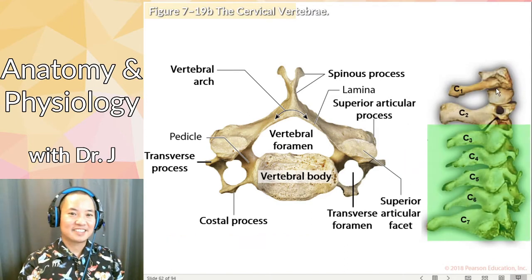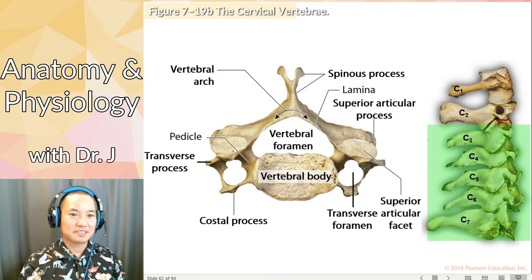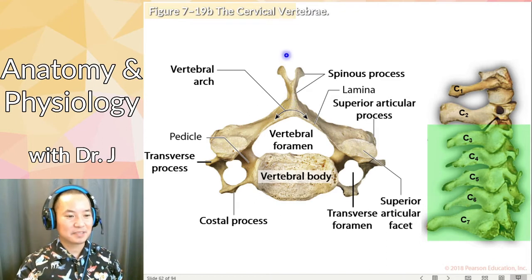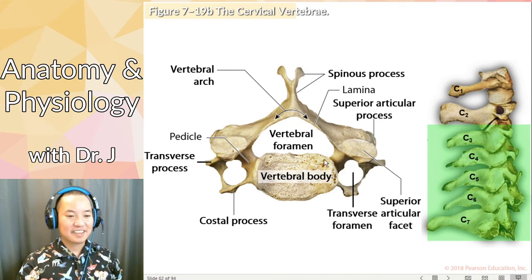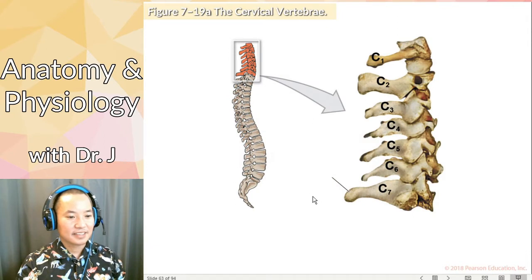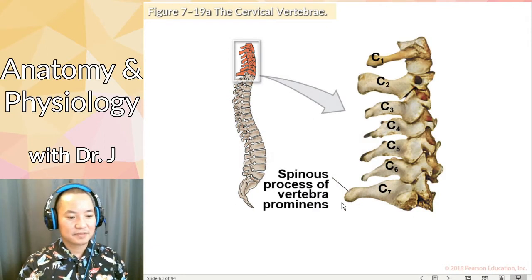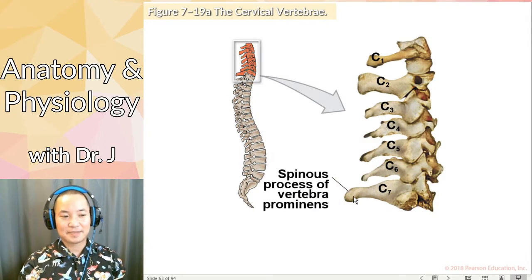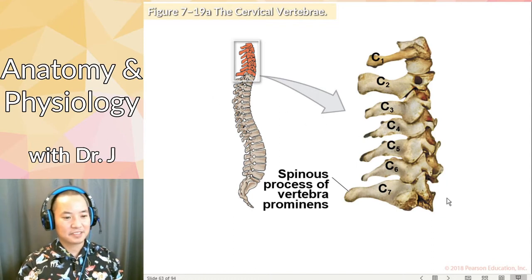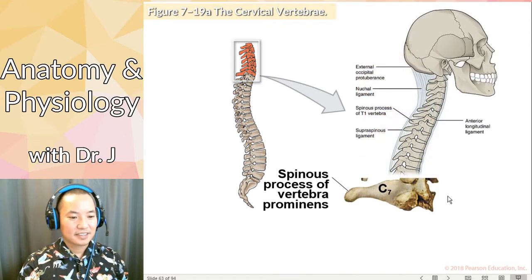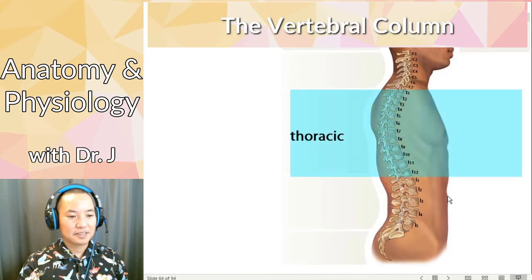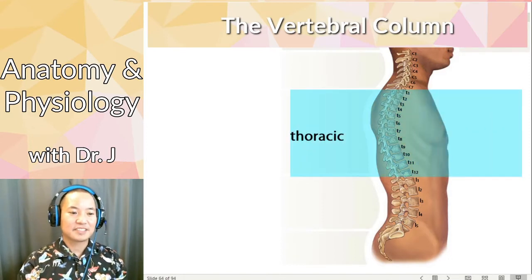These don't apply to the atlas and axis — the C1 and C2 — they have special anatomy. But C3 through C7 kind of have that general shape. This is called the vertebra prominens — the spinous process juts out. Right below that we have the thoracic region.